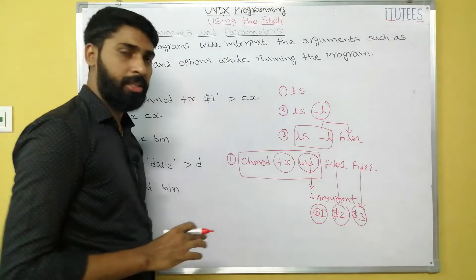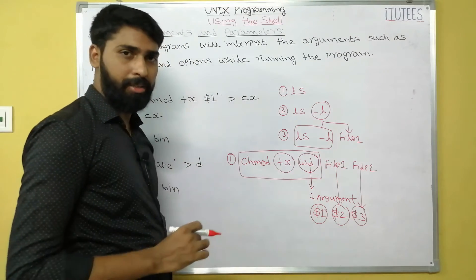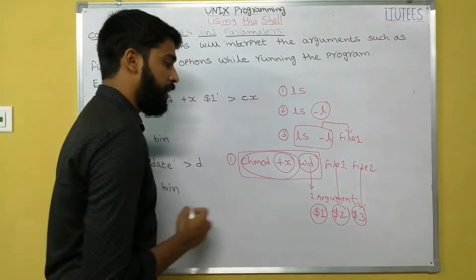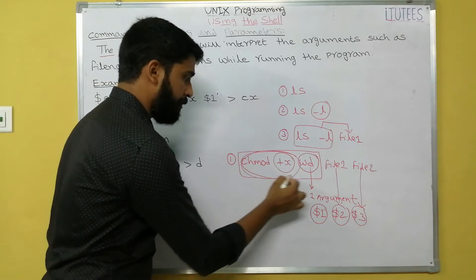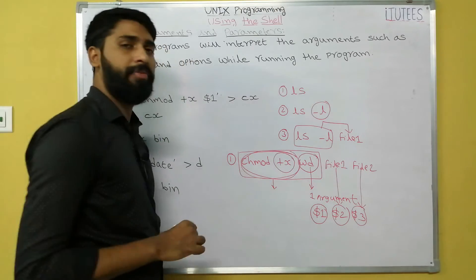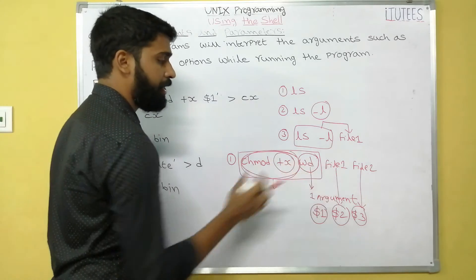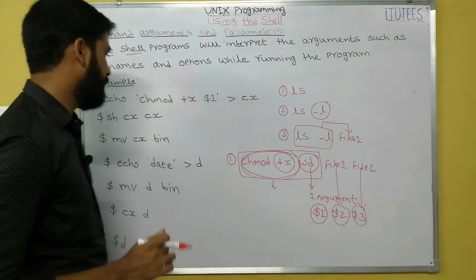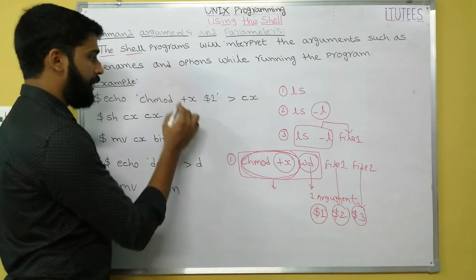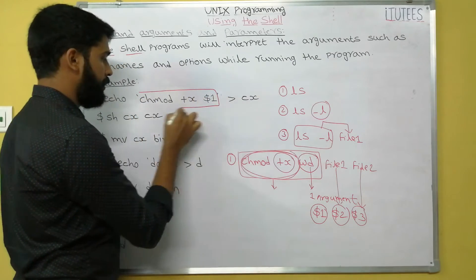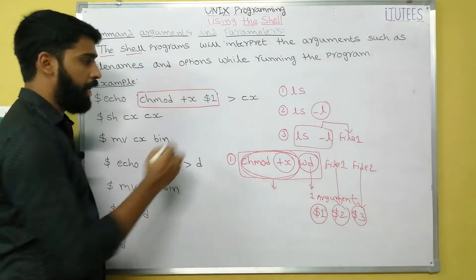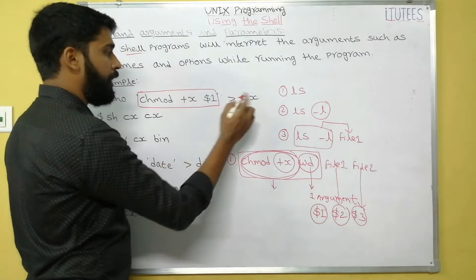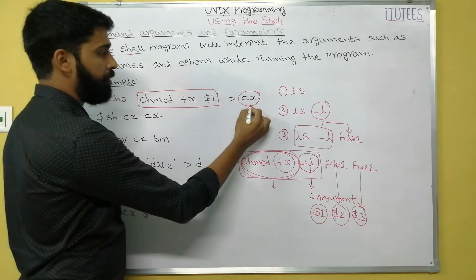Now my intention is to create one command and give it permissions. I want to make these permissions as a user-defined command, and by using it I am going to assign permissions to another user-defined command. For that I create the command: chmod +x $1, meaning I give one argument. I store this in a file named cx.